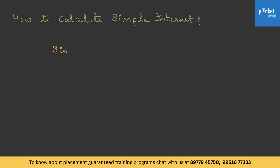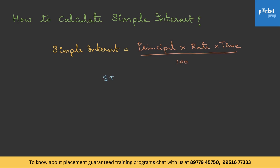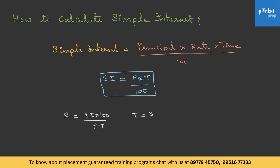The formula is: Simple Interest equals Principal multiplied by Rate multiplied by Time, divided by 100 — written as SI = PRT/100. If the question asks for Rate of Interest, then R = SI × 100 / PT. Time = SI × 100 / PR. And Principal = SI × 100 / RT. These are all permutations possible with this formula.